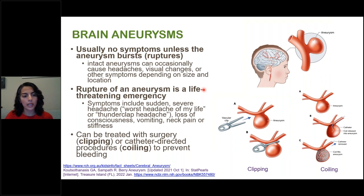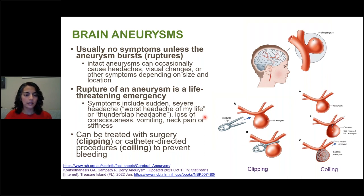The symptoms of a ruptured aneurysm — a life-threatening emergency — include a sudden severe headache, often described as the worst headache of their life, or a thunderclap headache. If it progresses, it can cause loss of consciousness, vomiting, neck pain, or stiffness. Aneurysms can be treated either by surgical clipping, which cuts off the circulation, or with a catheter-directed procedure where interventional radiology doctors go through an artery and place substance into the aneurysm to make it clot off.